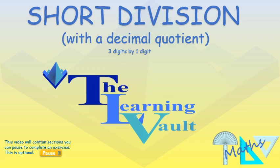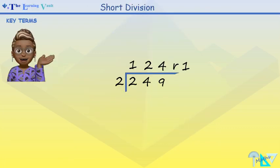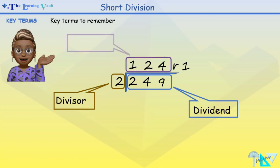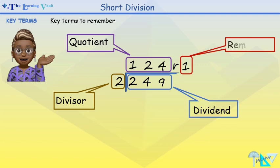This is a video clip on short division with decimal quotients, that is, answers in decimal. Key terms to remember: dividend, divisor, quotient and remainder.